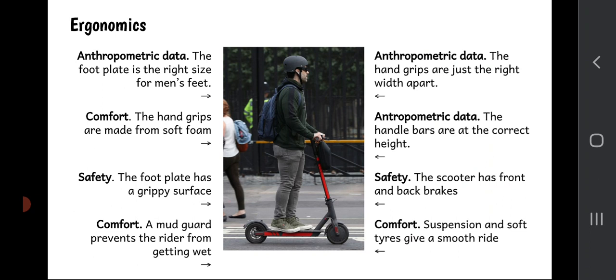The anthropometric data - the hand grips are just the right width apart, so when the rider is standing on this, it's nice and comfortable. And in fact, some high-performance e-scooters have adjustable heights and widths so that they can accommodate people from all over the world. The handlebars are also the correct height. In terms of safety, the scooter's got front and back brakes. And in terms of comfort, the suspension and the soft tyres give a smooth ride. So we would say that that scooter is ergonomic. It's comfortable, it's safe to use, and the designer has made use of anthropometric data to make sure all the sizes and shapes of things are correct.